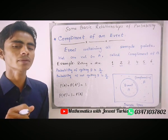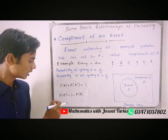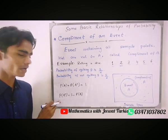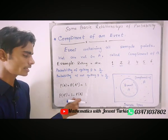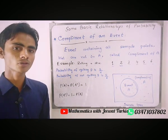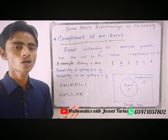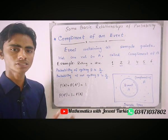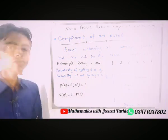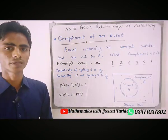So if we want to find the complement of any event, we can find it by 1 minus probability of A. This gives us the probability of A complement.